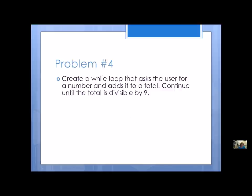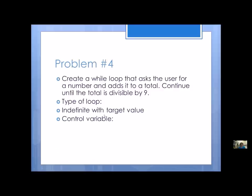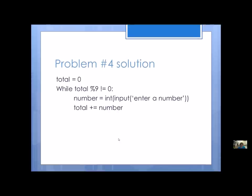Problem number four: create a while loop that asks the user for a number and adds it to a total — continue until the total is divisible by 9. We've got 'total' and some kind of target value, so this is an indefinite loop with a target value. The control variable is total, and the condition is a bit unusual: we're looking at the remainder. As long as the remainder is not zero — and why 'not'? Because we continue 'until' it is divisible, so I want the condition to hold while it's not divisible. Here's a possible solution.